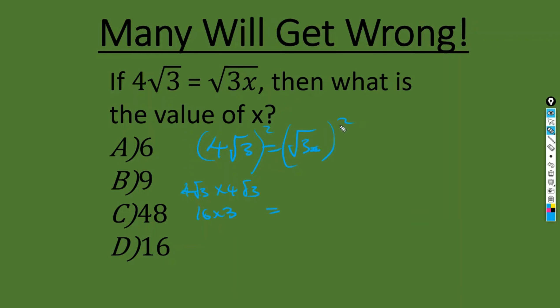So that's the square root. Okay, so you have 3x. So this is 16 times 3, which is 48, equals to 3x.